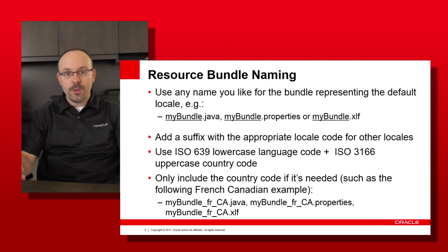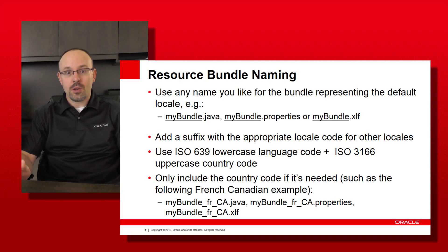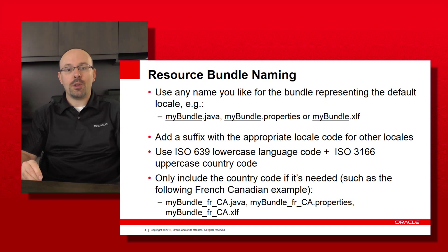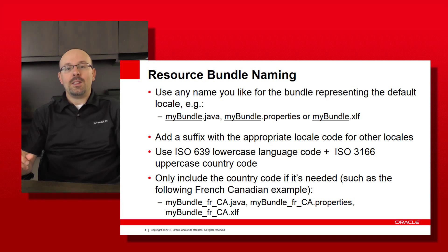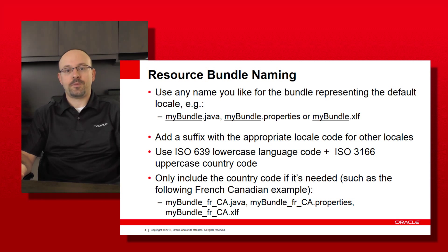Whatever bundle type you choose to use, the naming conventions for the bundle files are always the same. The only thing that will be different between the three bundle types is the file extension. For the application's default bundle, you simply specify a name — for example, myBundle.java for a Java class, myBundle.properties for a properties file, or myBundle.xlf for the XLIFF format. The tricky part comes when you want to support locales other than the default one.